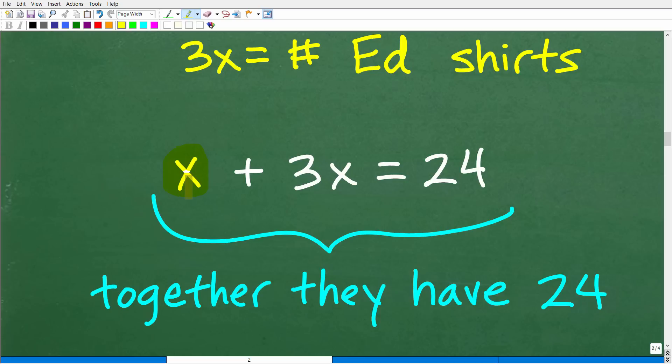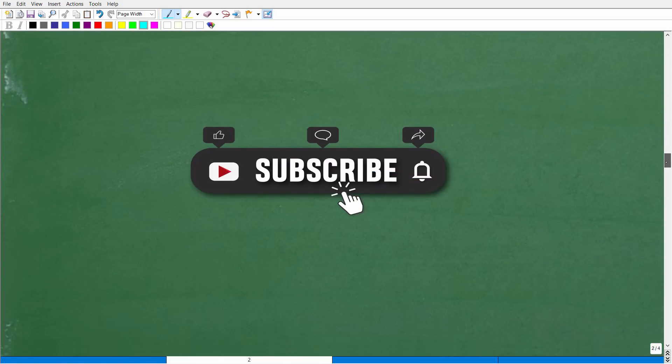So X, again, is how many shirts the dad has. 3X is three times as many as the dad. But this is Ed's shirts. And together, they have 24 shirts. Okay. So really, this comes down to solving this lovely basic algebra equation. So let's go ahead and get into that right now. But before we do, let's get into this.